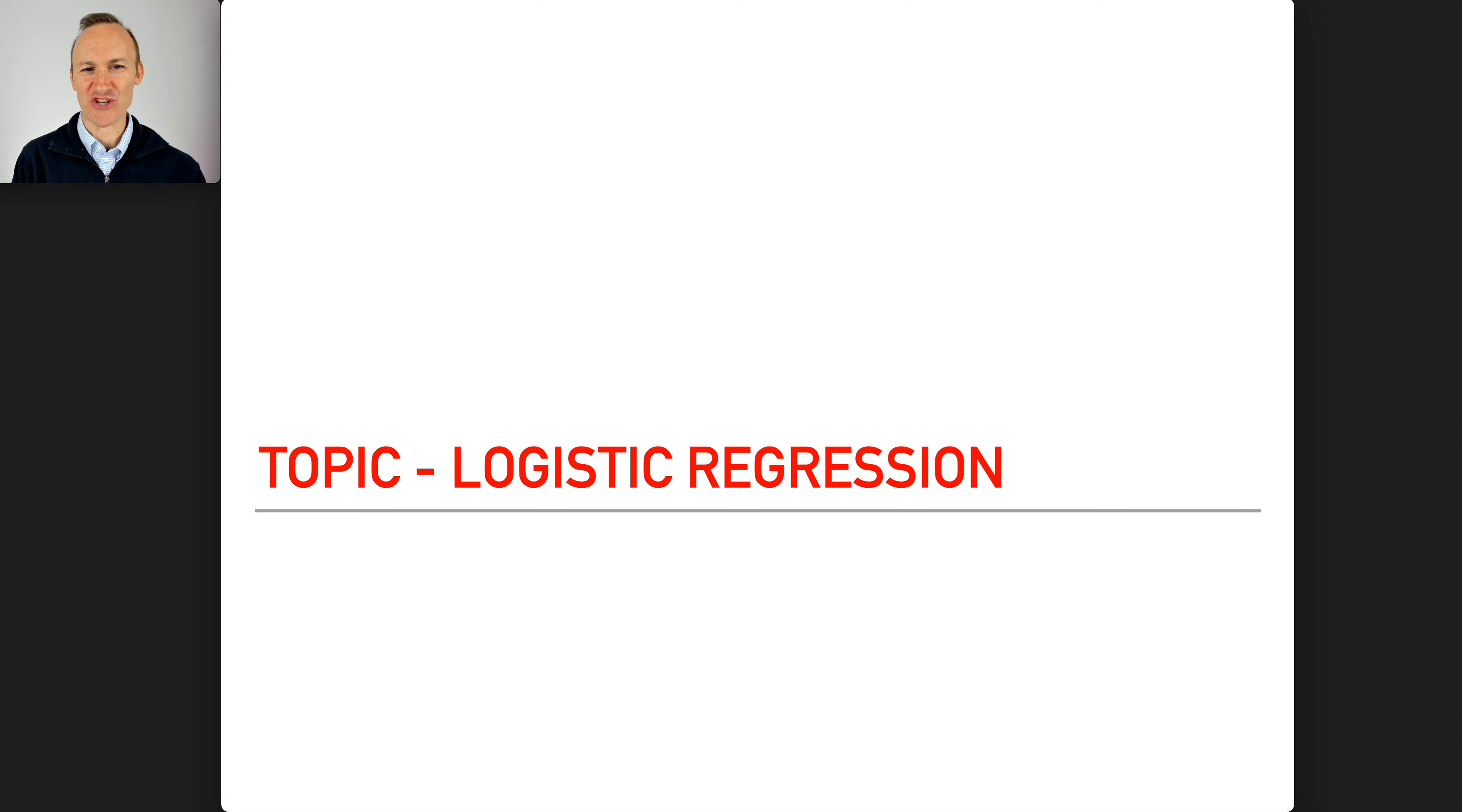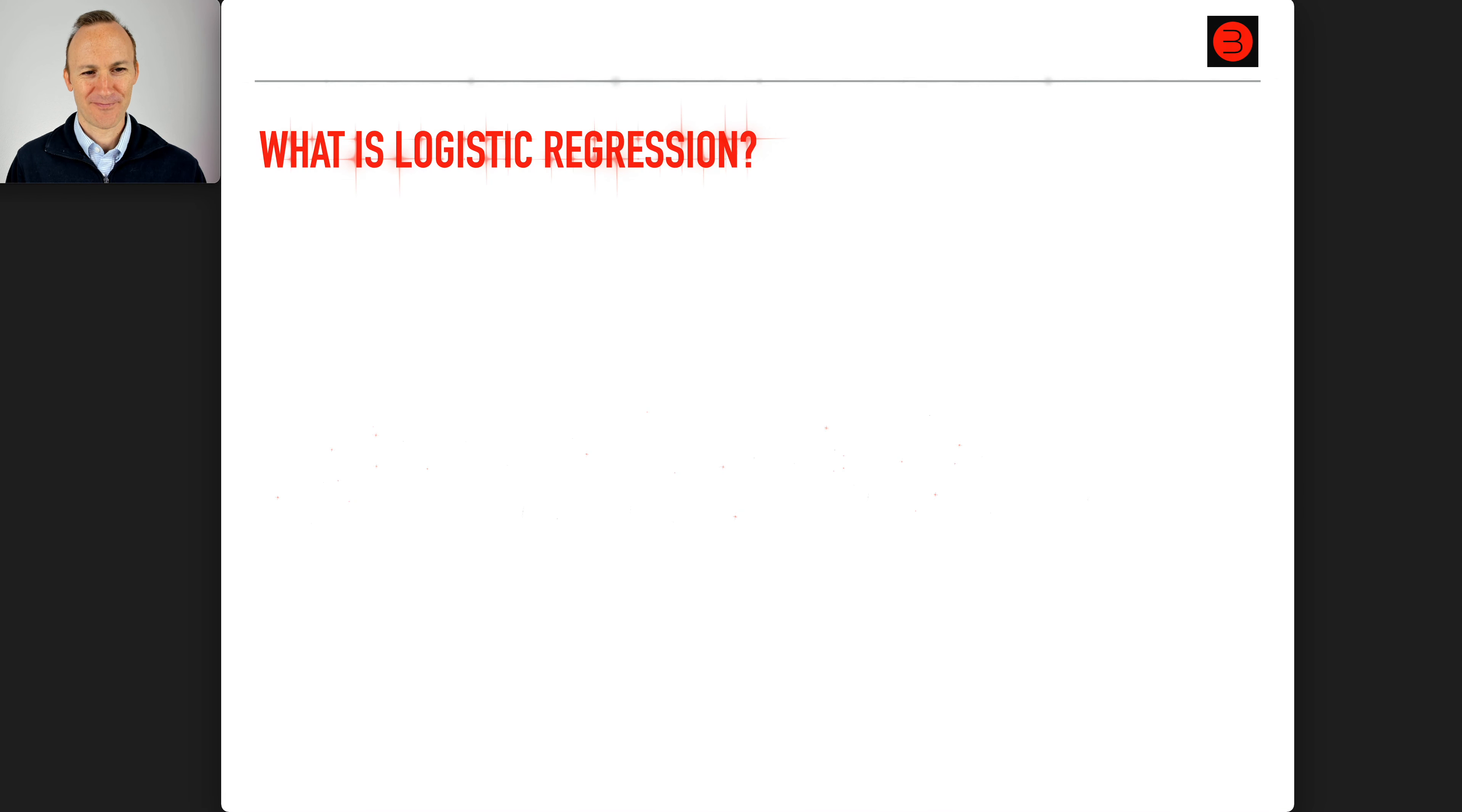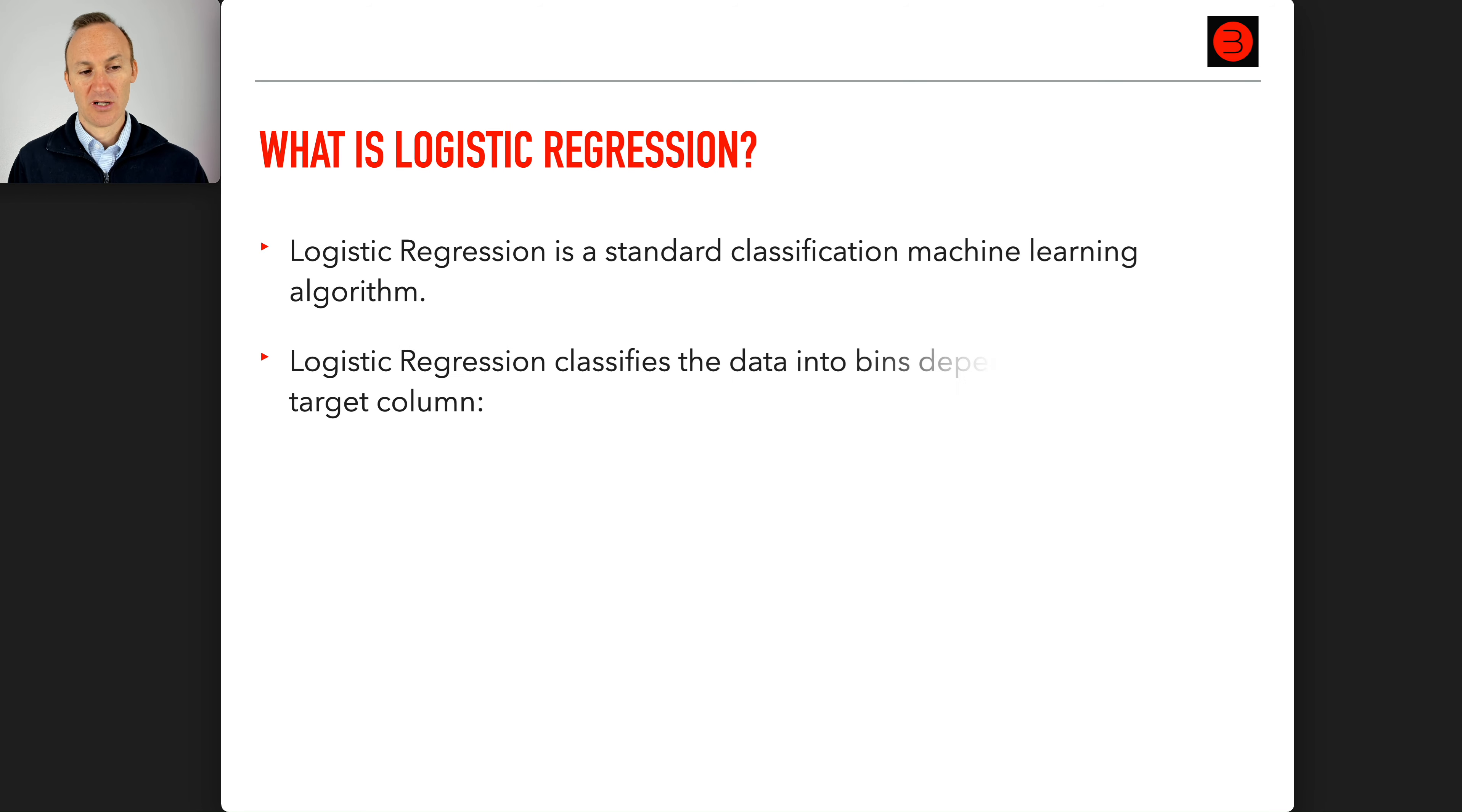Today's topic is logistic regression. So what is logistic regression? Logistic regression is a standard classification machine learning algorithm. Logistic regression classifies the data into bins depending on the target column, so you could have red, blue, and green. The idea here would be that the target column everything is red, blue, or green, thumbs up or thumbs down, and most commonly zero and one.